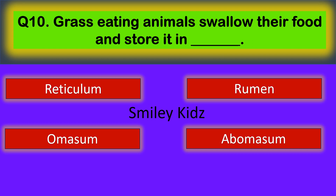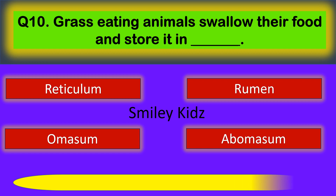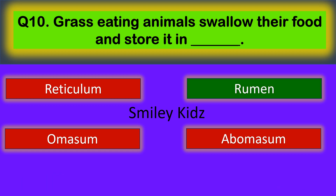Question number ten: grass-eating animals swallow their food and store it in — your options are: reticulum, rumen, omasum, and abomasum. The correct answer is rumen. Grass-eating animals swallow their food and store it in the rumen.